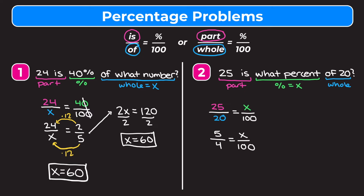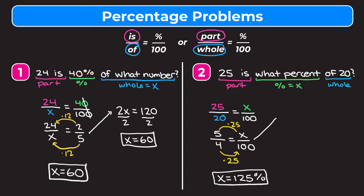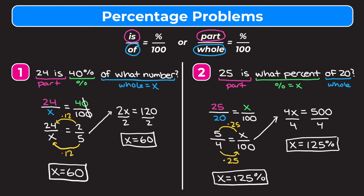Using the shortcut: to get from 4 to 100, multiply by 25. So to find x, multiply 5 by 25, which gives us 125. So our percent is 125%. Using cross multiplication: 4 times x equals 5 times 100, which is 500. Divide both sides by 4 to get x, and 500 divided by 4 is 125. So we get 125% either way. To mentally check: 25 is greater than 20, so it's going to be more than 100%. Our answer makes sense.